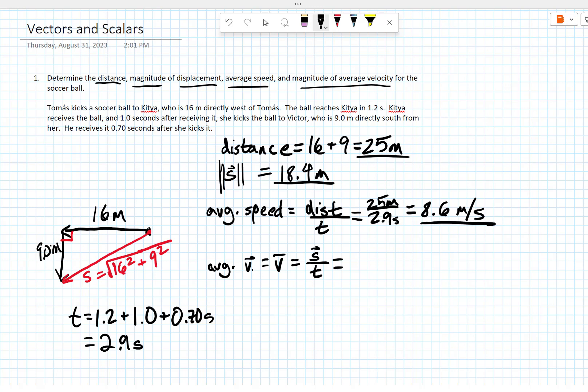And my average velocity is going to be displacement over time, that's going to be 18.4 meters over 2.9 seconds, which is 6.3 meters per second.